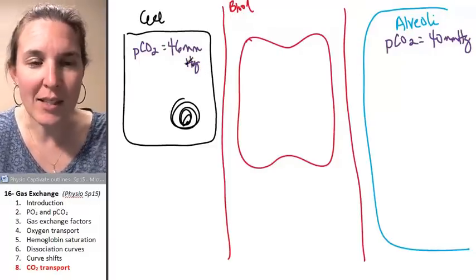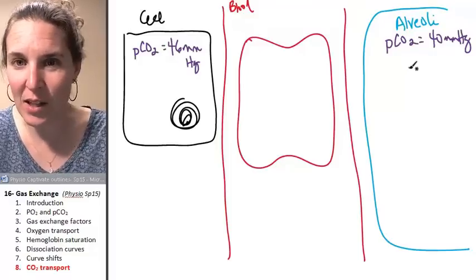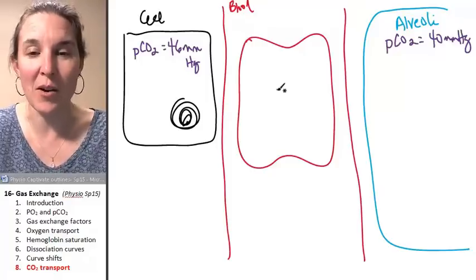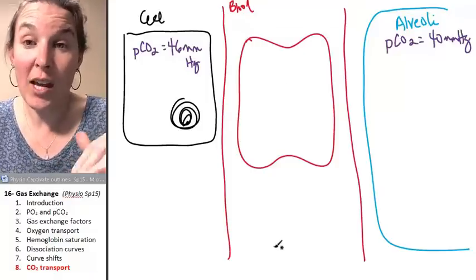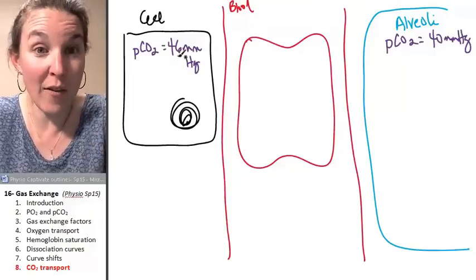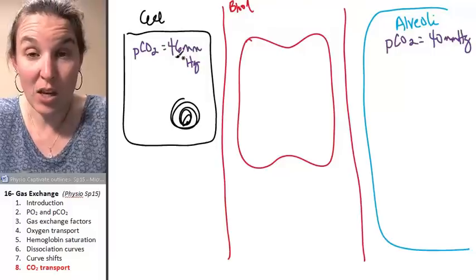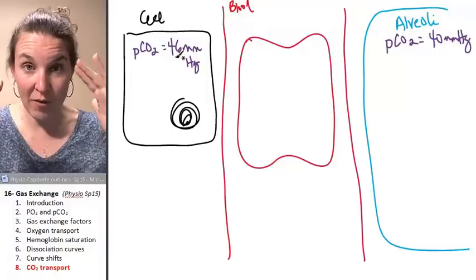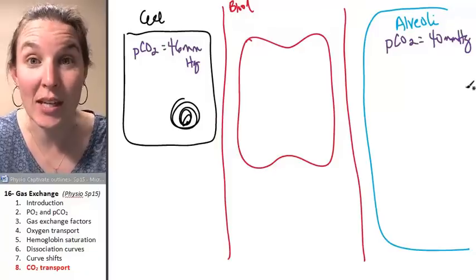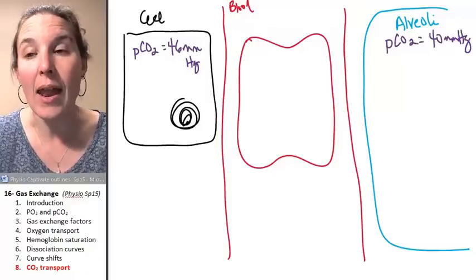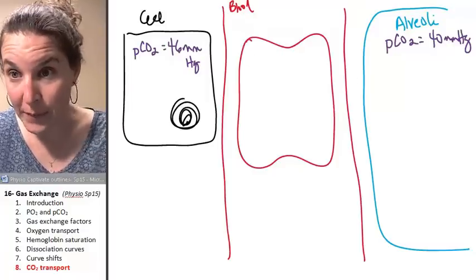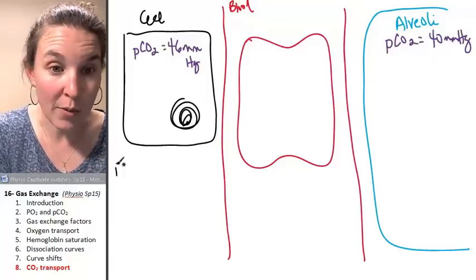My blood, since I have it right next to the cell and right next to the alveoli, the blood actually depends on what we're talking about. But at the fresh end, we're going to have a pCO2 of 40. And at the used up end, we're going to have a pCO2 of 46. So we're going to be thinking of our blood in the middle here in both ways. There are three ways that we can transport carbon dioxide in the blood. And I'm going to tell you about the first way, knowing that there are three of them.